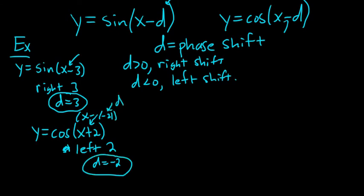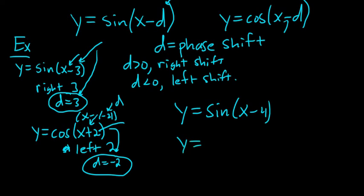Another way is just switch the sign. That might be the easiest way. Whenever it's x minus 3, it just becomes a plus 3. If it's x plus 2, it becomes a minus 2. Let's do another one. Sine of x minus 4. And then one more. Cosine of x plus 8.